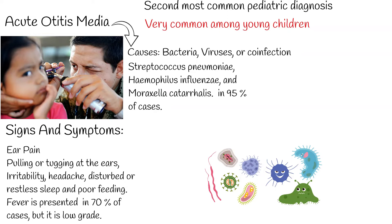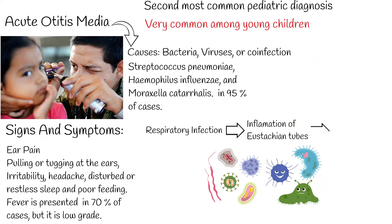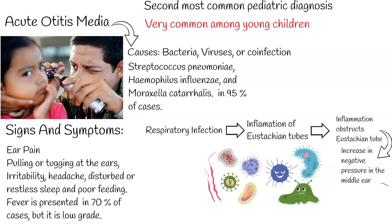Otitis media begins as an inflammatory process following a viral upper respiratory tract infection, involving the mucosa of the nose, nasopharynx, middle ear mucosa, and eustachian tubes. Due to the constricted anatomical space of the middle ear, the edema caused by the inflammatory process obstructs the narrowest part of the eustachian tube, leading to a decrease in ventilation. This leads to a cascade of events resulting in increased negative pressure in the middle ear, increasing exudate from the inflamed mucosa and buildup of mucosal secretions, which allows for colonization of bacterial and viral organisms in the middle ear.